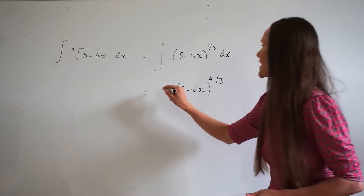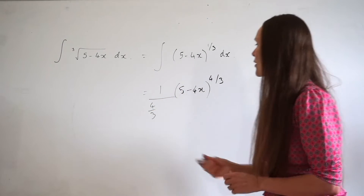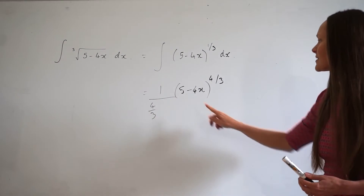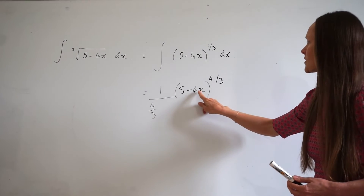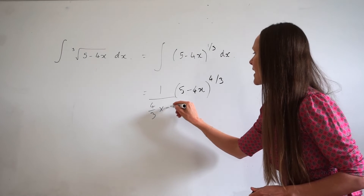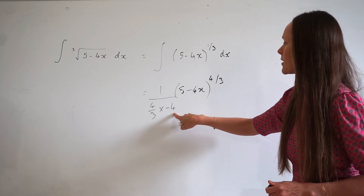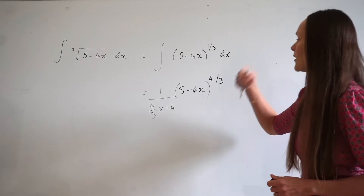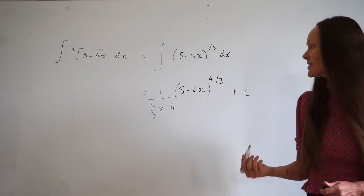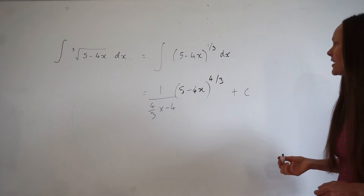Dividing by 4 thirds is the same as multiplying by 1 over 4 thirds. Thirdly, divide by the coefficient of x, which in this question is negative 4 — the same as multiplying by negative a quarter. Don't forget to add your constant of integration, c.